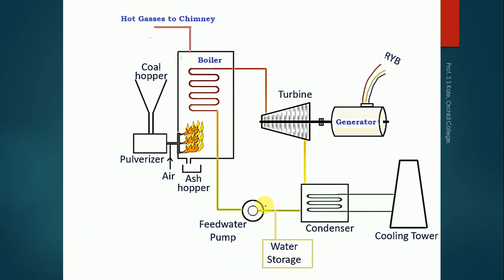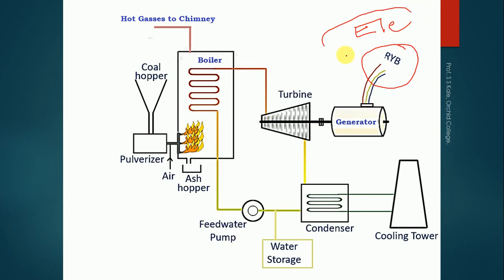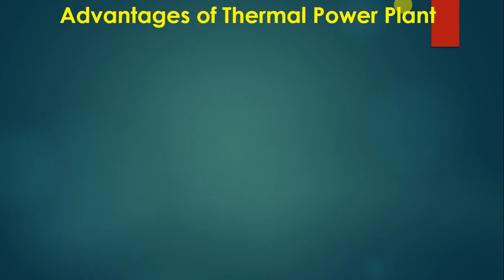In summary, the thermal power plant aims to generate electrical energy available from the generator. Components like the boiler, turbine, condenser, and other parts generate mechanical energy, which is given to the generator, and the generator produces electrical energy. This is the complete working of a thermal power plant.